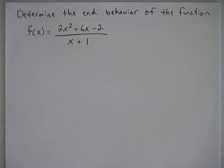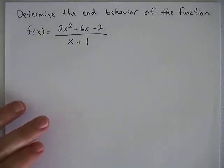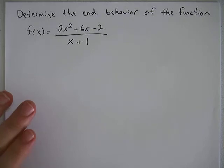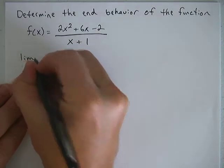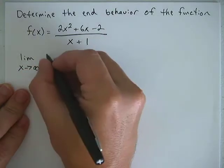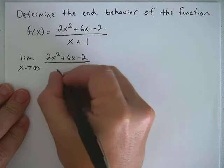For this problem we're asked to determine the end behavior of the function f(x) = (2x² + 6x - 2)/(x + 1). End behavior basically means we're being asked to find the limit as x approaches infinity. So let's go ahead and write that down: the limit as x approaches infinity of (2x² + 6x - 2)/(x + 1).